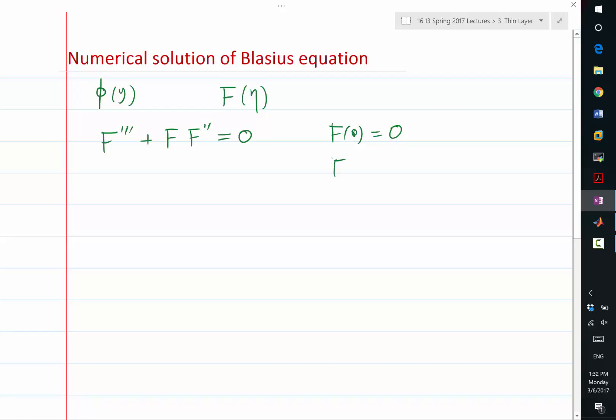f prime of zero equal to zero. What is the physical meaning of that? No slip. The velocity is equal to zero.